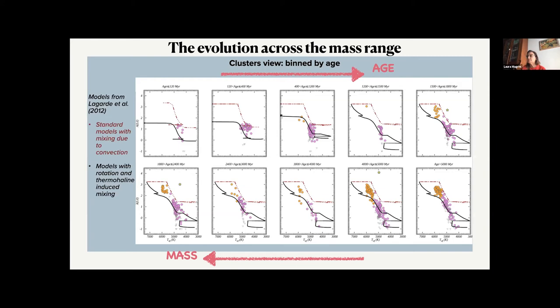So in all metallicity ranges, in all mass ranges, we see that the models with rotation and thermohaline mixing are very important to reproduce the observation. In particular, when the mass decreases, the age increases, we see that it's important to have thermohaline mixing.